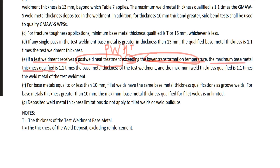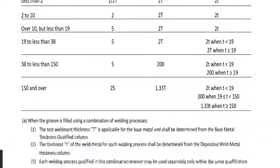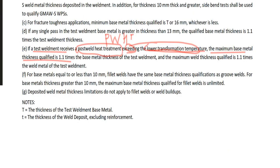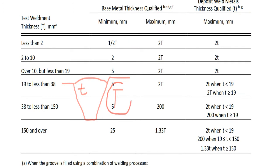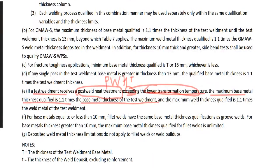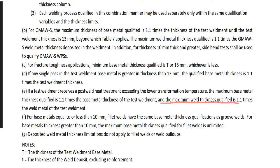When PWHT exceeds the lower transformation temperature of 723°C, the maximum base metal thickness qualified is 1.1 times the base metal T. For example, if T is 10mm, normally the second line applies: 2mm to 20mm. But with this condition, maximum qualified is 10 × 1.1 = 11mm. The same 1.1× rule applies to the maximum weld metal thickness qualified: small t × 1.1.